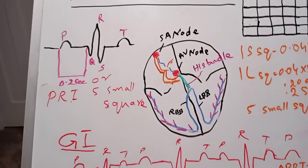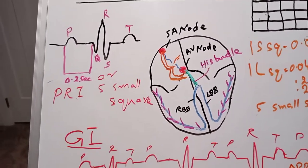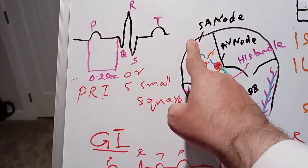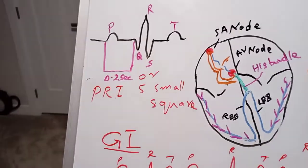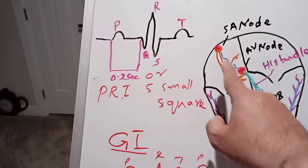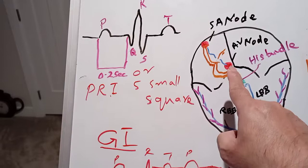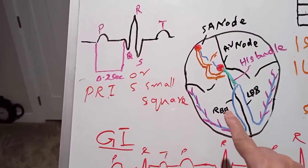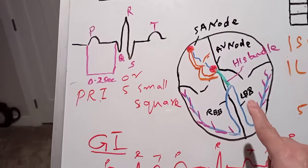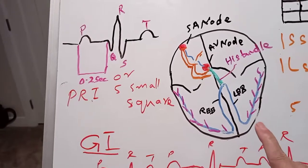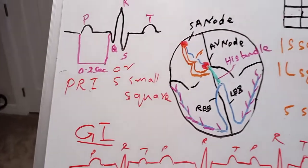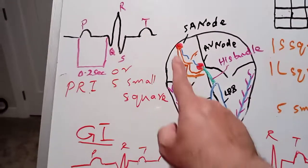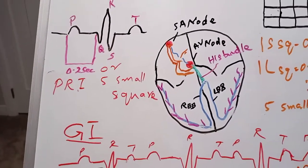There is a system of electricity production in the heart. There is the SA node present in the roof of the right atrium, and another node — the AV node — present at the base of the right atrium. They are connected by internodal fibers. From there a bundle goes into the ventricle known as the His bundle, which divides into two branches: the right bundle branch and the left bundle branch. Finally they give rise to small tiny fibers known as Purkinje fibers, which supply each and every cell of the heart.